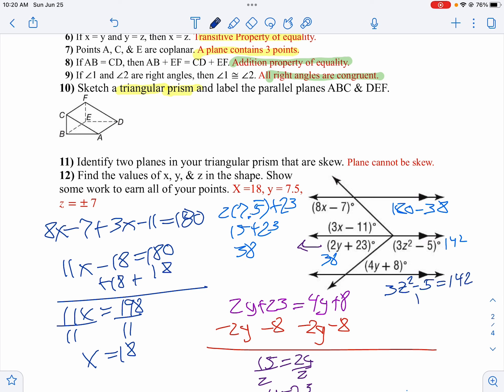I'm going to add 5 to both sides. So 3z squared is 147. I'll divide by 3.